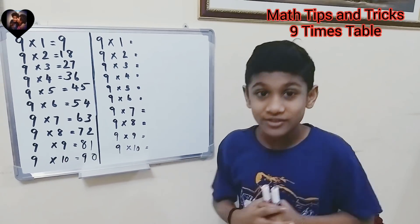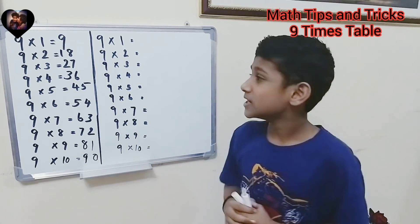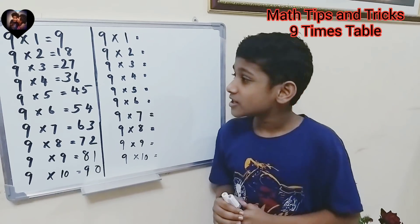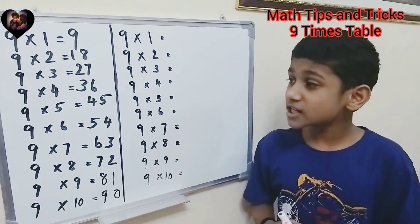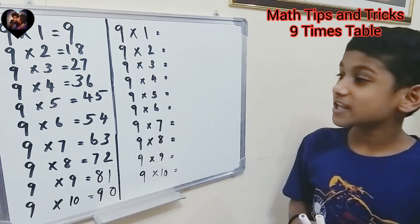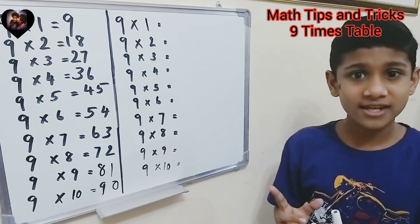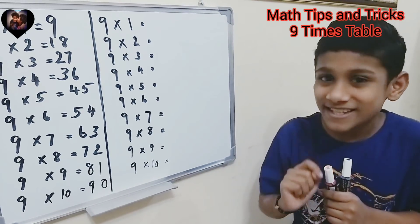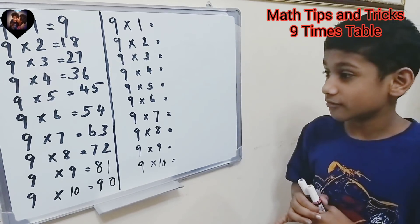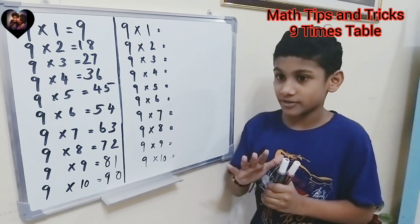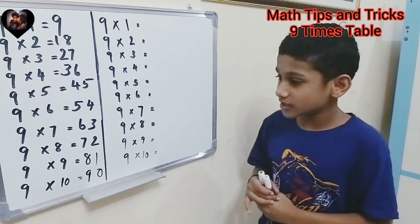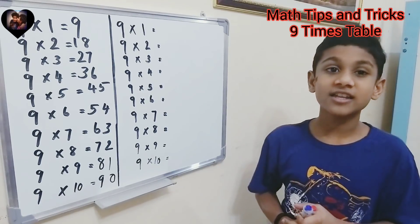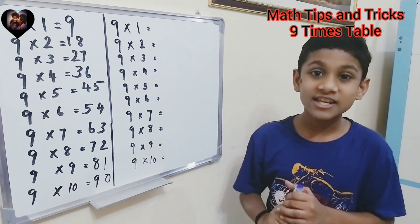So if you guys know it you can watch along, if you don't you can save this. Nine times one equals nine, nine times two equals eighteen, nine times three equals twenty-seven, nine times four equals thirty-six, nine times five equals forty-five, nine times seven equals sixty-three, nine times eight equals seventy-two, nine times nine equals eighty-one, nine times ten equals ninety.